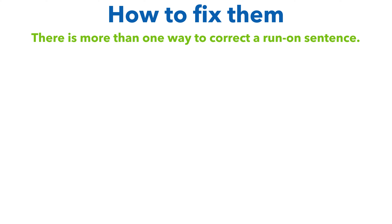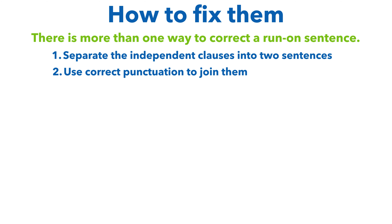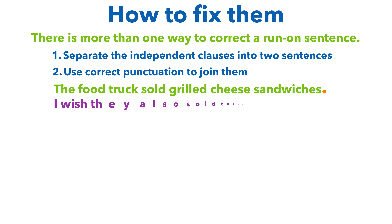How do you fix run-on sentences? There is more than one way. The first is to separate the independent clauses into two sentences. One way is to use a period: 'The food truck sold grilled cheese sandwiches. I wish they also sold turkey clubs.' In this case we have separated the two complete sentences by using a period.